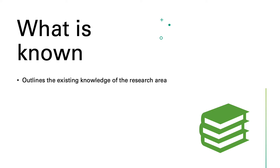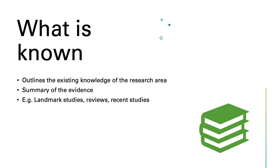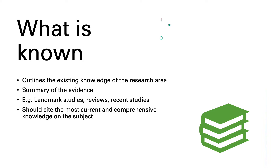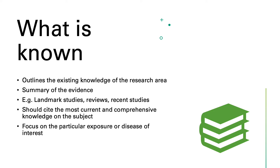What is known outlines the existing knowledge of the research area by providing a summary of the evidence. These can include landmark studies, reviews, or recent studies. This summary should cite the most current and comprehensive knowledge on the subject. Note that the literature cited should be directly relevant to your specific study and inform your research question, focused on the particular exposure or disease of interest.